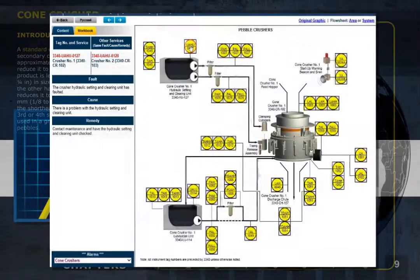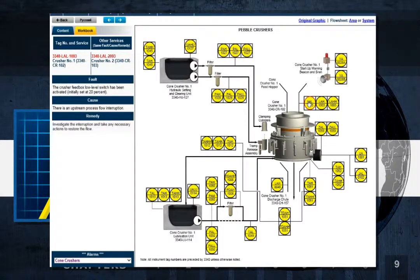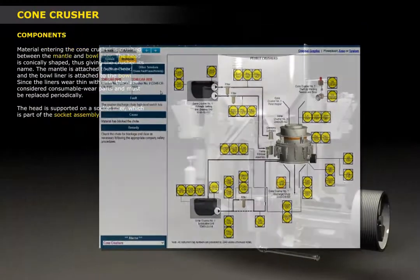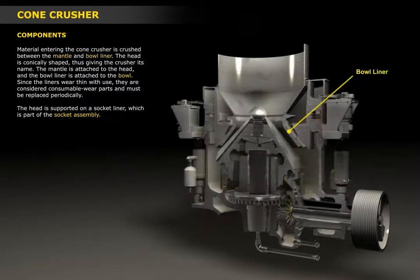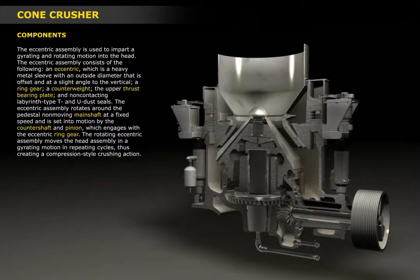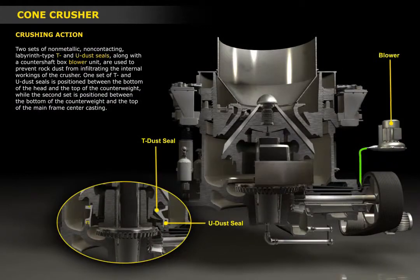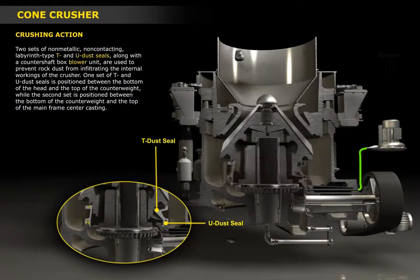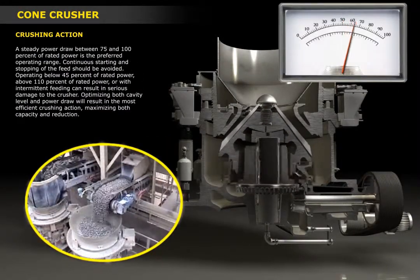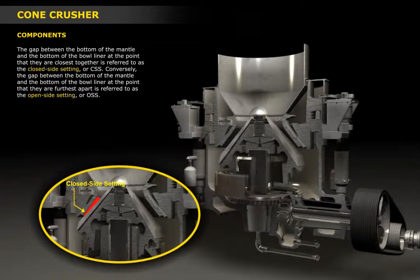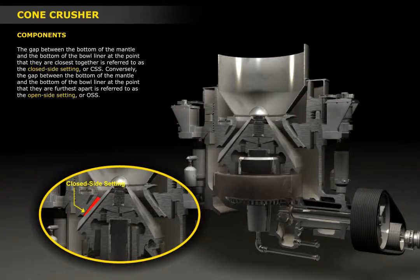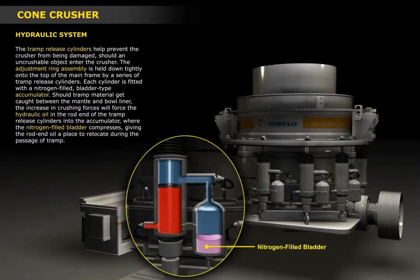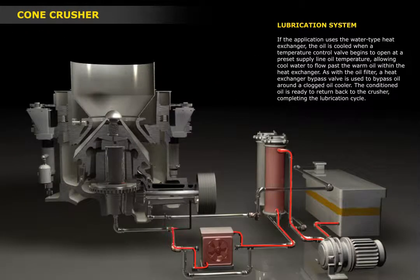This module explains the cone crusher's principle of operation and provides detailed descriptions of the major components and the role that each component plays in its operation. You'll learn how the drive system operates, the details of the dust sealing system, power draw control, the method of adjusting the closed and open side setting, the hydraulic and tramp material release systems, and details of the lubrication system.